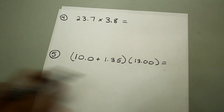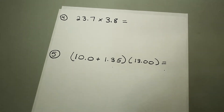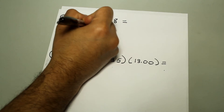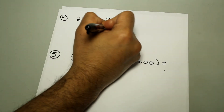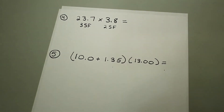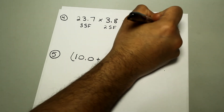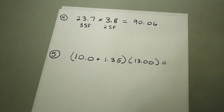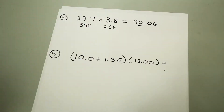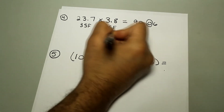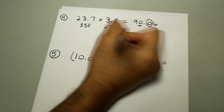We have 23.7 times 3.8. First we write how many significant figures each number has — the first one has three significant figures, the next one has two significant figures. So we know the answer needs to have two significant figures. First we multiply to get 90.06. The answer needs two significant figures, so that's at the 0. The 0 to the right tells us to round down since 0 is less than 5. So the final answer will be 90 with a decimal point.